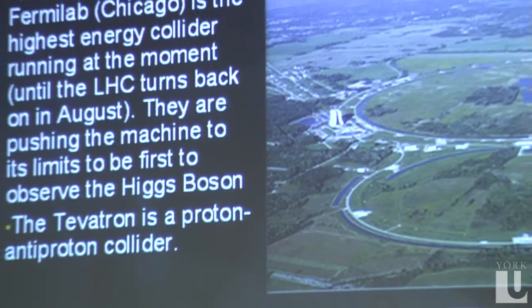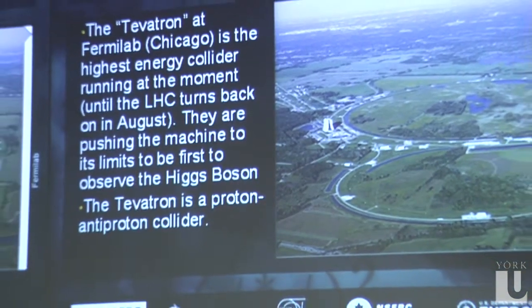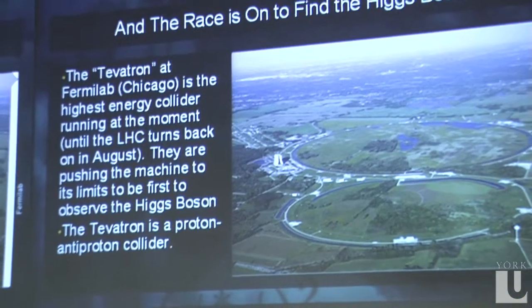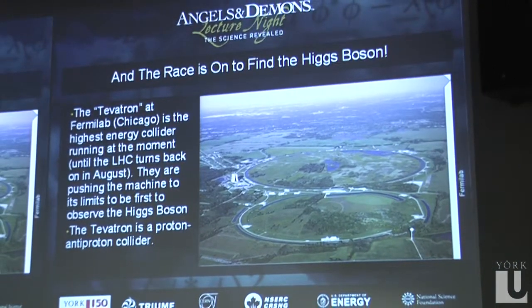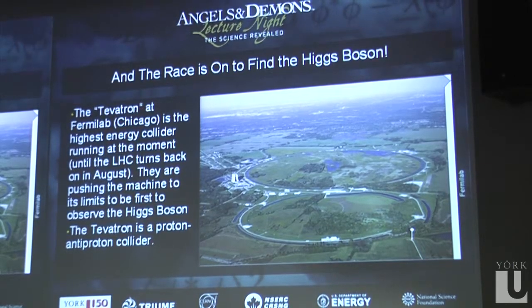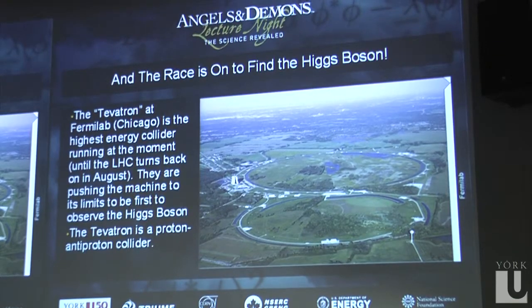The LHC — the Large Hadron Collider — has finding the Higgs boson as one of its primary goals. There's also a collider called Fermilab outside of Chicago which is just on the edge of possibly seeing it, and they would love to see it first and scoop the Large Hadron Collider. This is a picture of the so-called Tevatron outside Chicago, which is a one-kilometer radius collider. It is an antiproton collider, so not only are we studying antimatter, we're using antimatter to study antimatter.